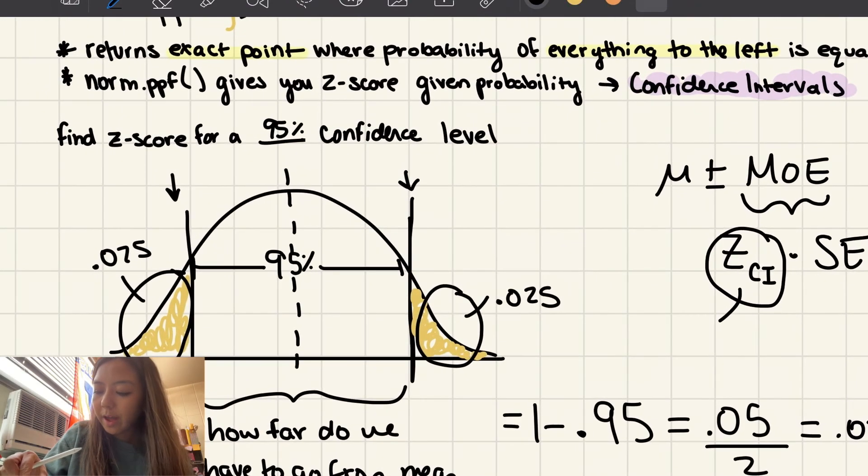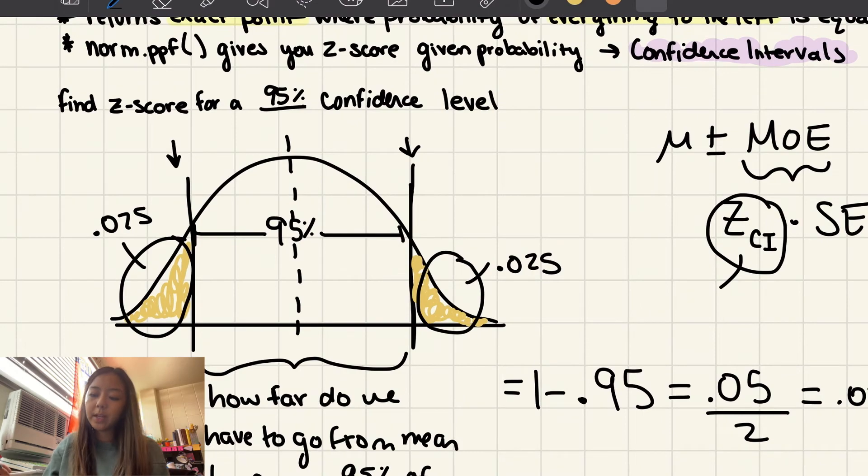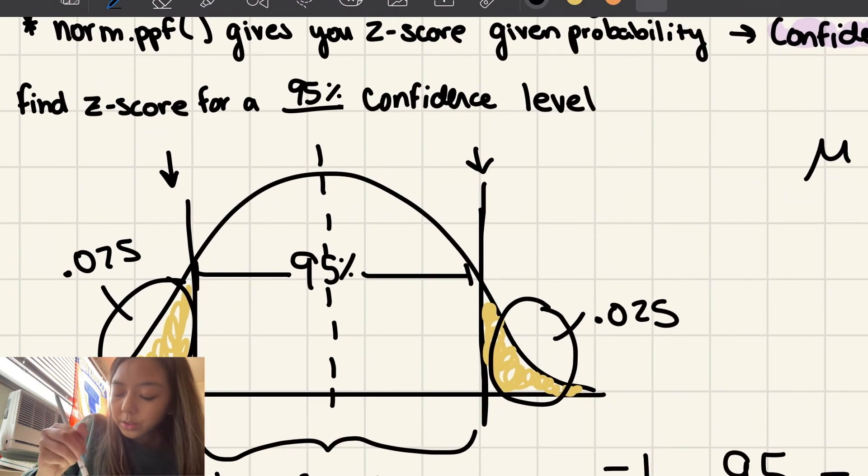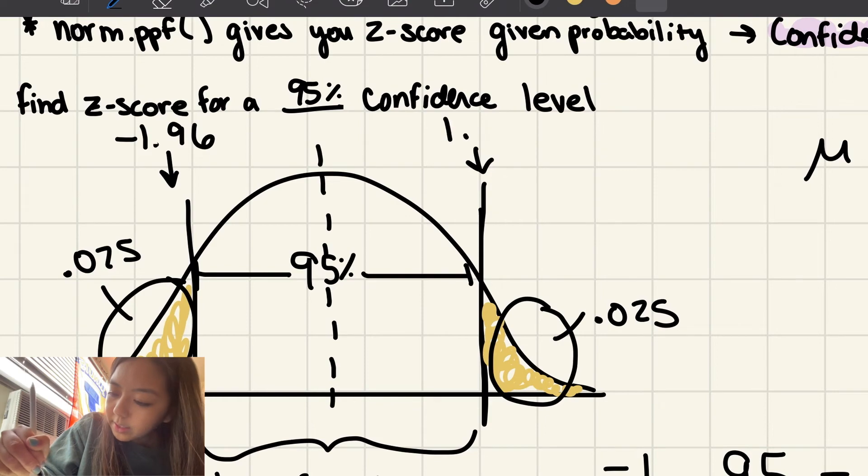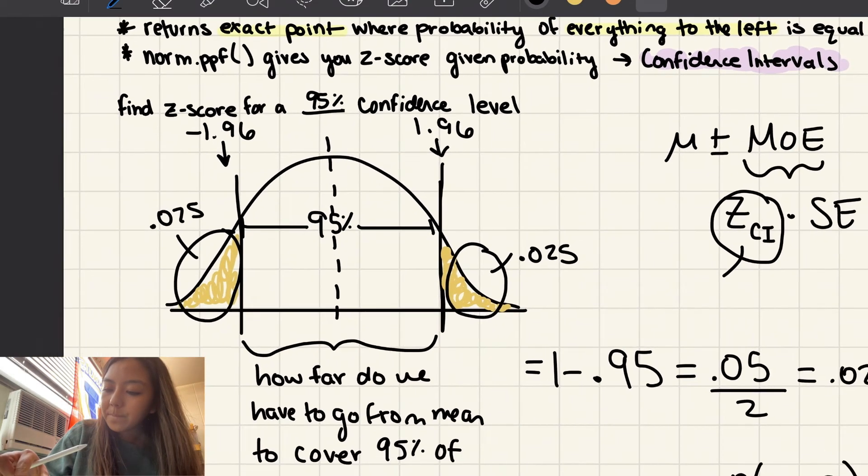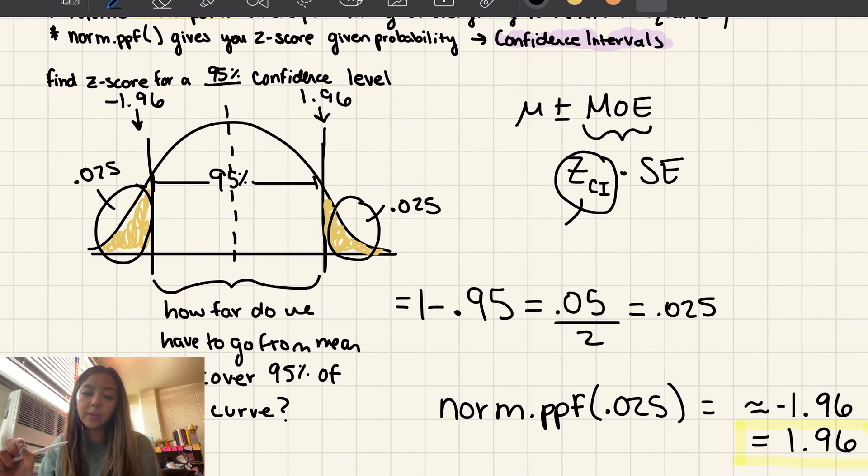So to answer this question, how far do we have to go from the mean to cover 95% of the curve, of the normal curve? It's going to be between z-scores of negative 1.96 and 1.96. And that's going to be your z-score for a 95% confidence interval.